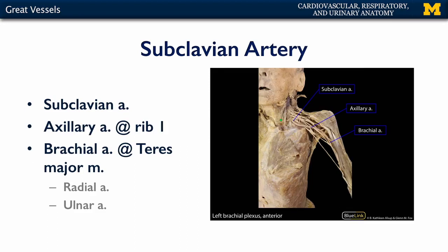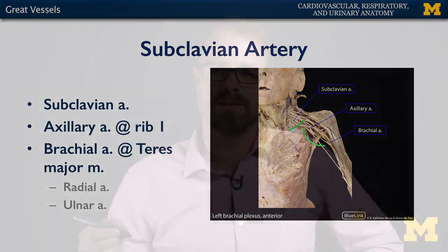The subclavian artery becomes the axillary artery at the lateral margin of the first rib. So anything beyond the lateral margin of the first rib is known as the axillary artery. The axillary artery is transmitted through the axilla, or what we would colloquially refer to as the armpit, and is a very important anatomical landmark for different portions of the brachial plexus.